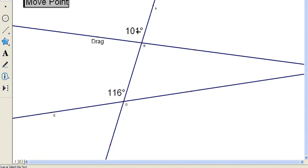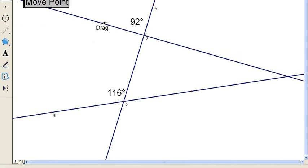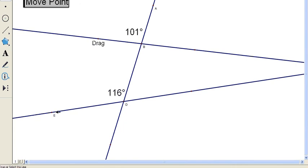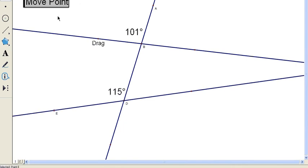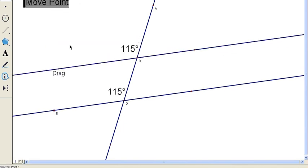Notice when the lines are not parallel, these angles are different from each other. But when the lines are parallel, these angles are exactly the same. And the reverse statement is true as well. If we can somehow arrange for these angles to equal each other, then the lines will have to be parallel to each other.